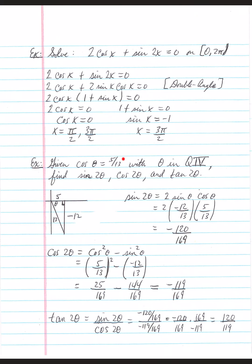Given cosine(θ) = 5/13 with θ in quadrant 4, find sine(2θ), cosine(2θ), and tangent(2θ). Draw a right triangle diving into quadrant 4. Cosine is adjacent over hypotenuse: 5 and 13. Using the Pythagorean theorem: √(13² − 5²) = √(169 − 25) = √144 = 12. But in quadrant 4 the y-direction is negative, so the opposite side is −12.